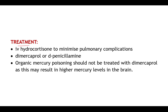Coming to the treatment of mercury poisoning: to avoid pulmonary complications, IV hydrocortisone — a corticosteroid — may be given. Then dimercaprol or D-penicillamine can be used as a chelating agent. However, in case of organic mercury poisoning, it should not be treated with dimercaprol, because this may result in higher mercury levels in the brain. So this precaution should be taken.